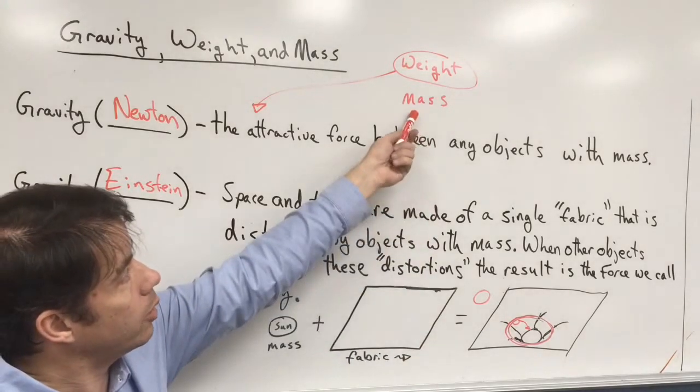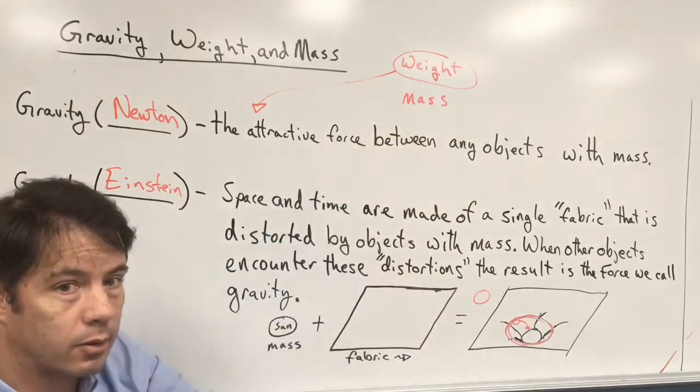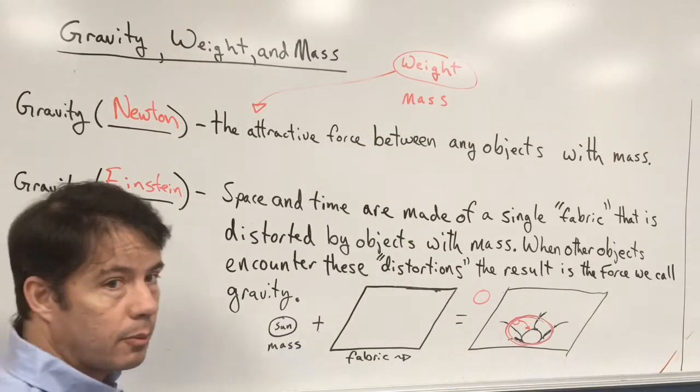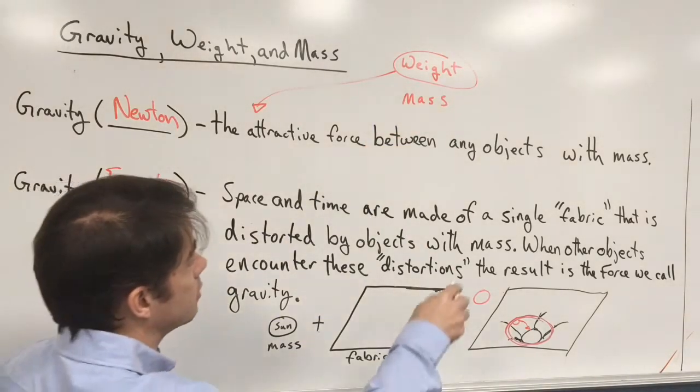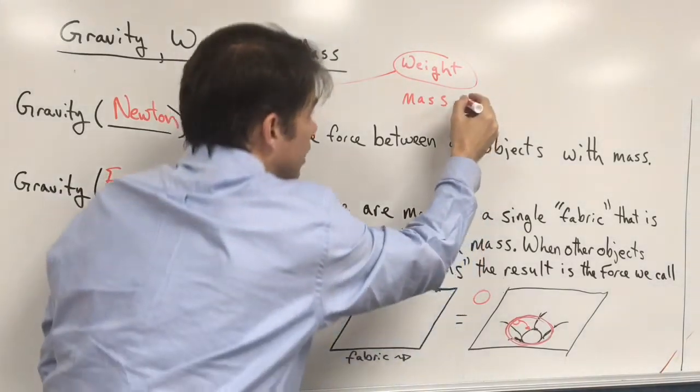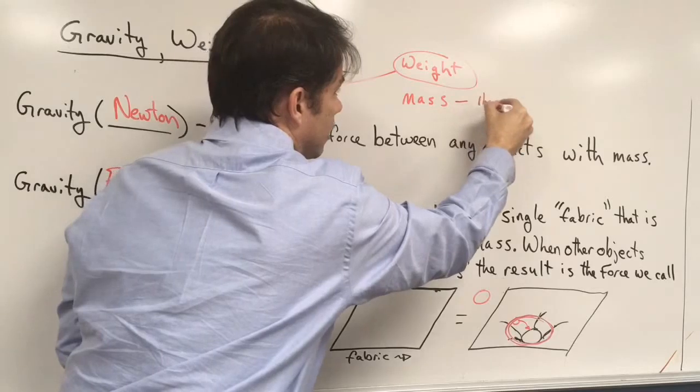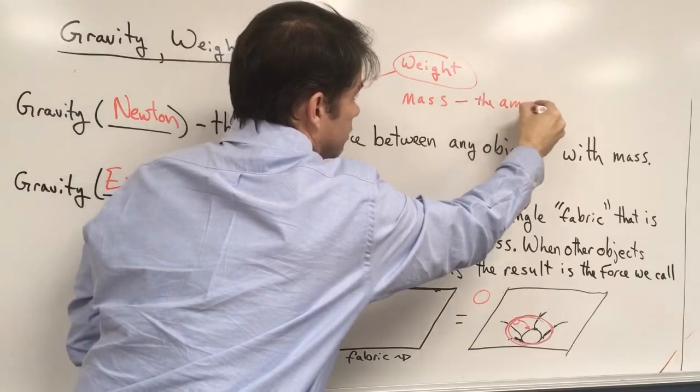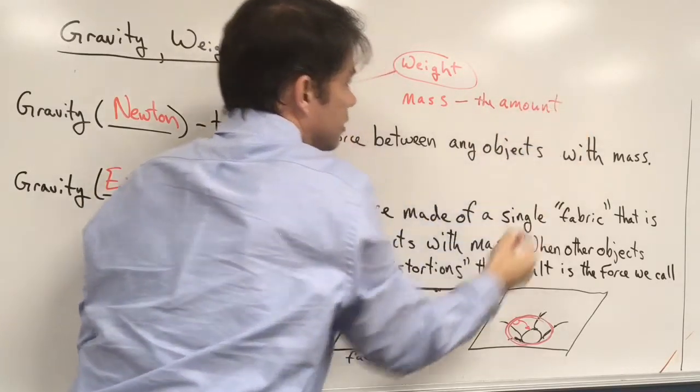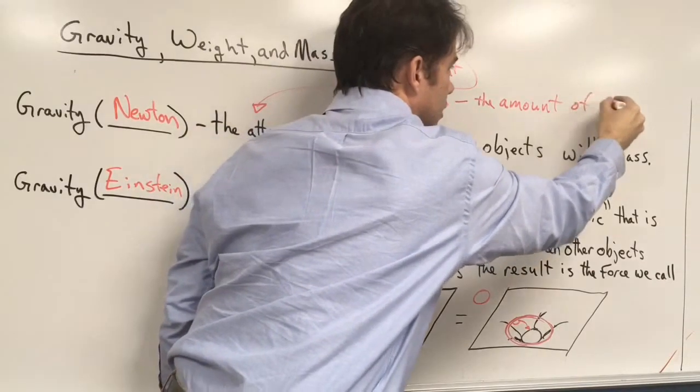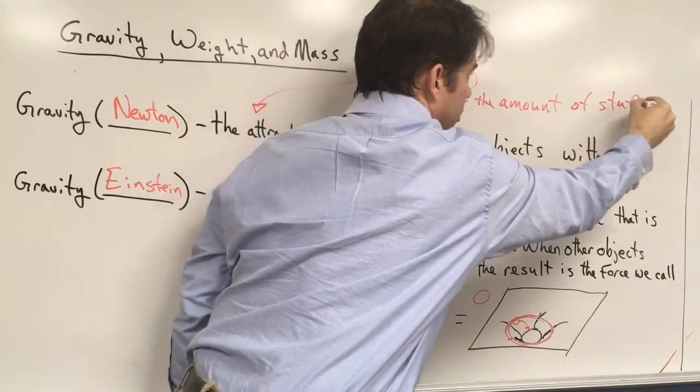So with all of this, I keep bringing up the word mass, and there's generally two definitions that people like to use when we talk about mass. The first one is we will say that mass is the amount of stuff in an object. That's kind of a chemistry definition, and it's a simple definition.